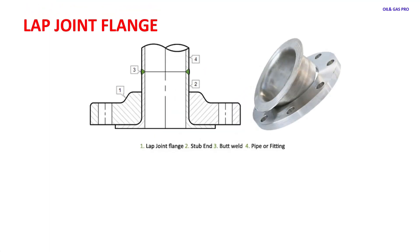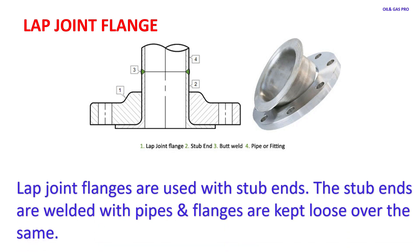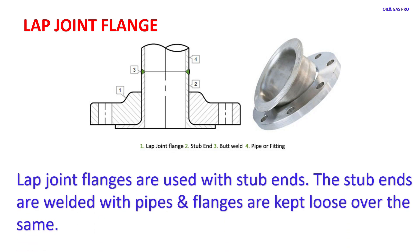Lap joint flanges are used with stubbed ends. The stubbed ends are welded with pipe flanges or kept loose over the same.